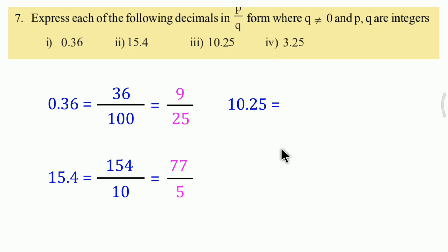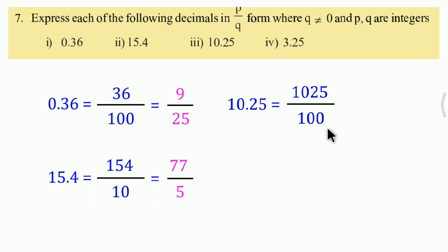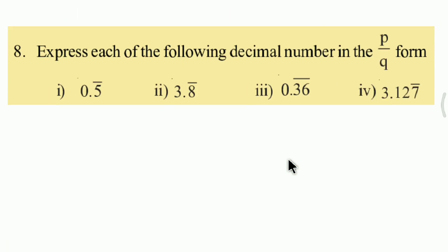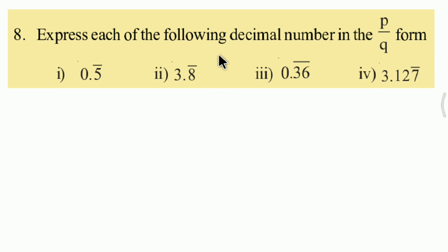Next problem is 10.25. There are 2 digits after the decimal point, so the denominator is 100. Multiply: 10.25 into 100 gives 1025. So 10.25 equals 1025 upon 100, which simplifies to 41 upon 4. That is the answer - very easy. The next question involves non-terminating recurring decimals being converted to p by q form, unlike the previous terminating decimals.